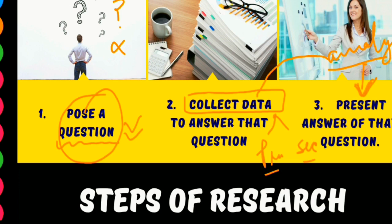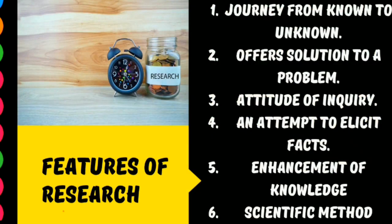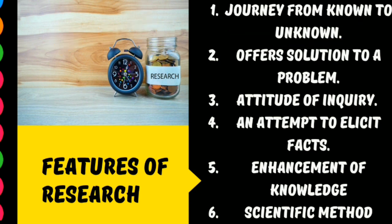So that was the meaning of research. Now let's come to the features of research. The first feature is 'journey from known to unknown.' Research is a journey in which we move from known things to unknown things. 'Known' means we already have some information and data about the topic on which we are doing research. Using that existing information, we obtain new knowledge.